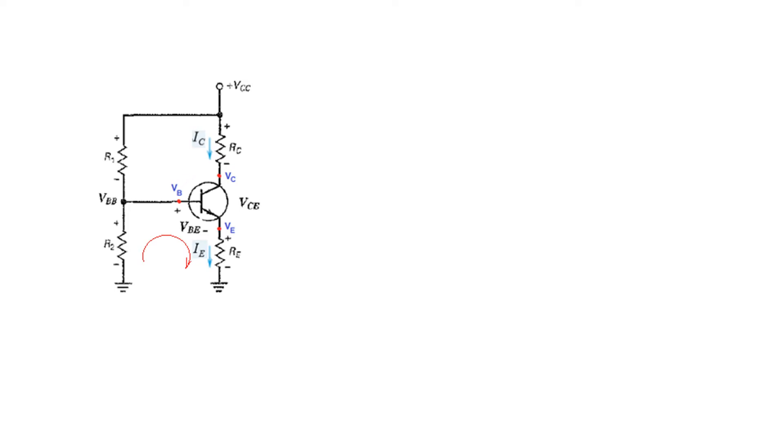We can write a couple of equations. If we follow the KVL, we start from here. This is VBB here, positive here and negative here. If we start from here, negative VBB, and then we come here, positive VBE, and then we come at this point of VE, so positive VE is equal to 0. This is one equation we can write with the help of KVL.